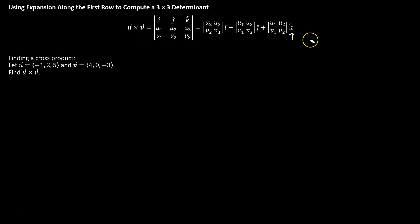So anytime we want to calculate the cross product between two vectors, we're going to create this 3x3 matrix, and then we'll expand along the top row.